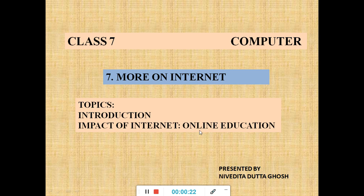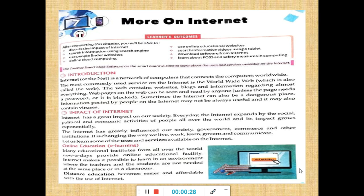The first topic we are going to learn is online education, under the impact of internet. Let us begin. Take out Chapter 7, More on Internet, from your book. Internet is a network of computers that connects computers worldwide. The most commonly used service on the internet is the World Wide Web, also called the web. The web contains websites, blogs, and information regarding almost everything. Web pages can be seen and read by anyone unless the page needs a password or it is blocked.